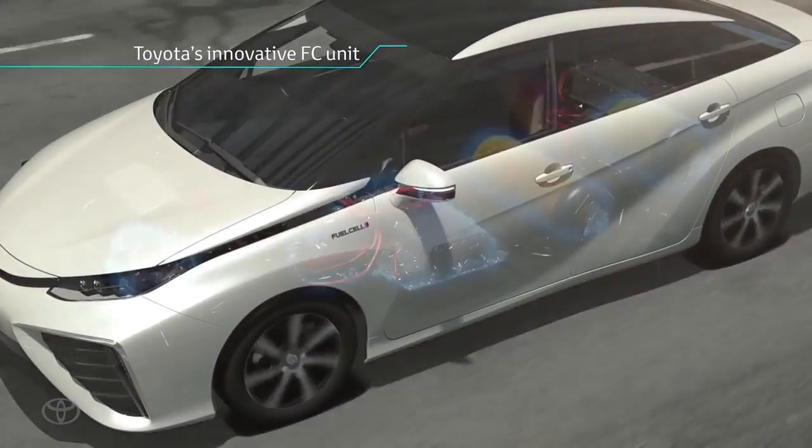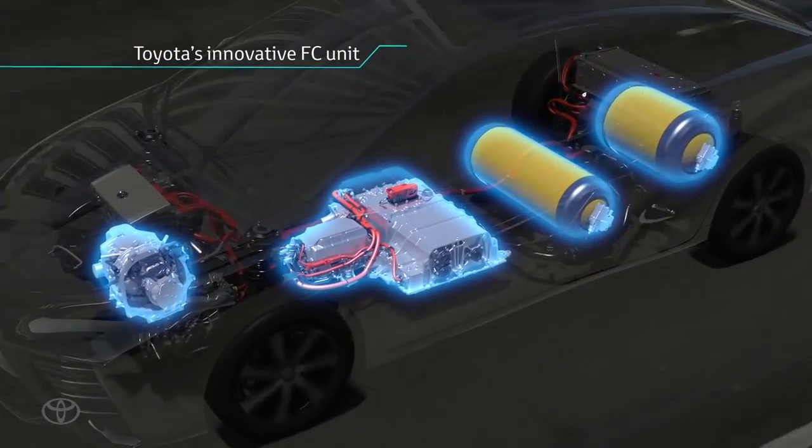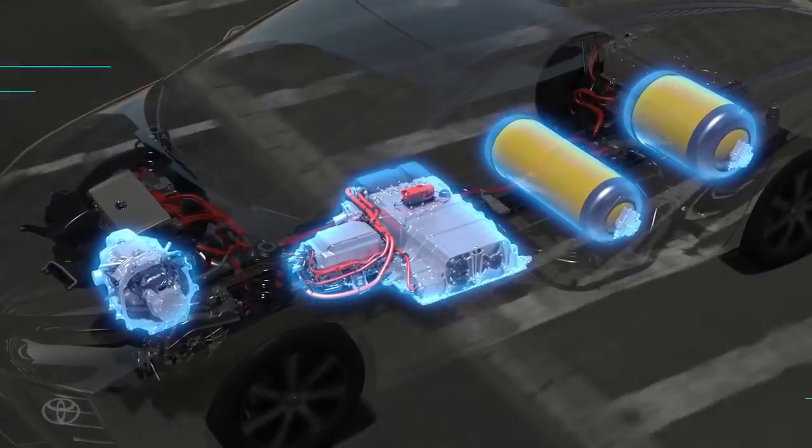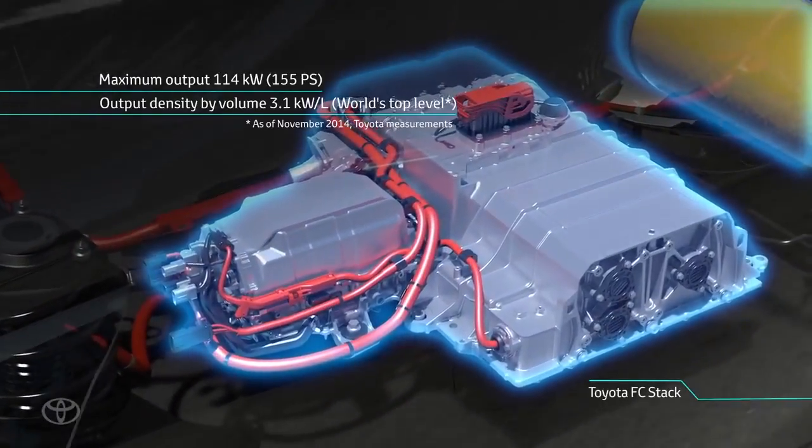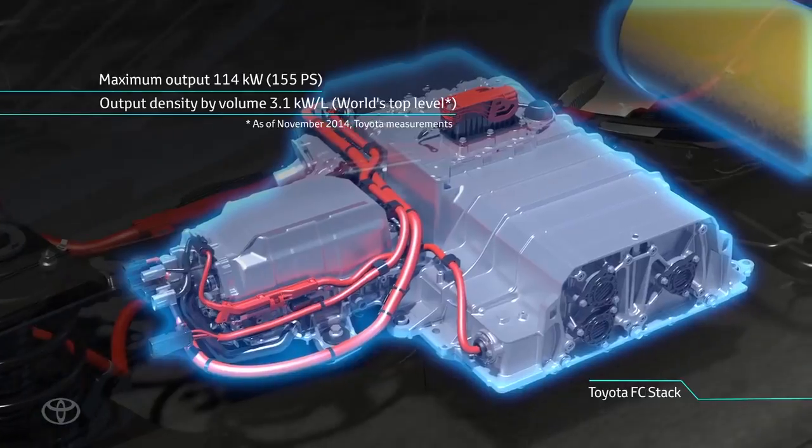The fuel cell unit in the FCV generates over 100 kW of its own electricity, operating at 3.1 kW per liter of output power density.